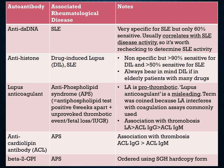Anti-dsDNA is very specific for SLE, but only 60% sensitive. It usually correlates with SLE disease activity, so it is worth rechecking to determine activity for SLE. Antihistone is associated with drug-induced lupus and lupus. It is non-specific, but 90% sensitive for drug-induced lupus and 50% sensitive for SLE. Always bear in mind drug-induced lupus in elderly patients who are on many medications.